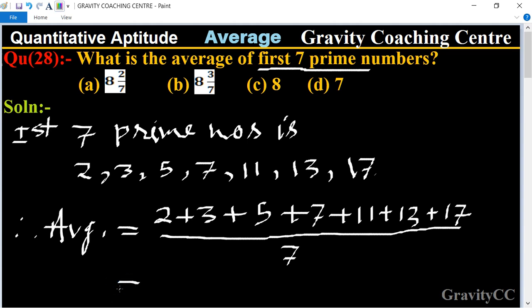So, equal to 58 upon 7. So, it is equal to 8 whole number 2 by 7, which is the required answer. So, option A is the correct answer.